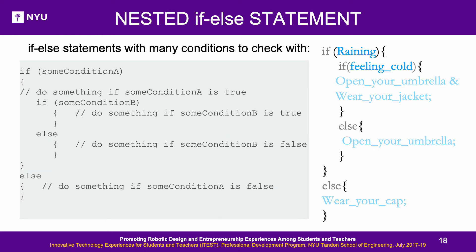Nested If-Else Statement: A condition can be checked for further multiple sub-conditions within the initial condition. Using the rain situation: if it is raining, you have two options — if it is cold, wear your jacket and open your umbrella; if it is not cold, just use your umbrella. If it is not raining, wear your cap and go for a walk.